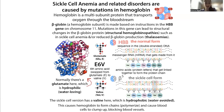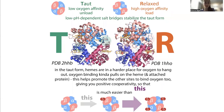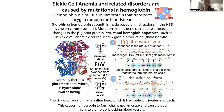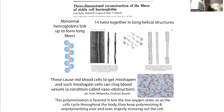As this hemoglobin is traveling throughout the bloodstream through oxygen-poor and oxygen-rich environments, this site becomes kind of more exposed or less exposed. And when it's in oxygen-poor environments, what can happen is that it gets more exposed.